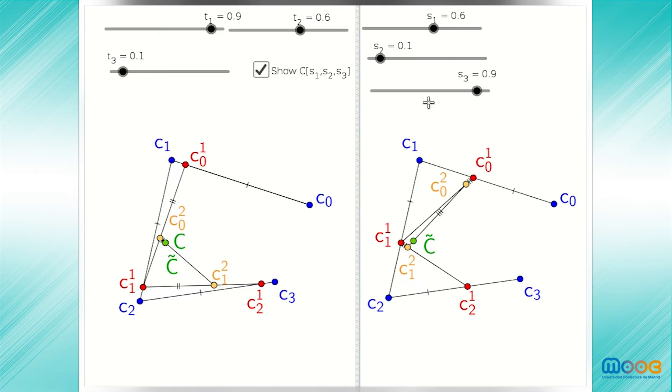If we were to change s sub 3, we see that the point corresponding to the proportions s moves away from c. However, if we put all three values equal but in different order, the points coincide. We can change this s2 to 0.9, and s3 to 0.1. And again, the points coincide. So we see that while the intermediate stages of the algorithm to compute the points depend very much on the proportions, the final point obtained does not depend on the order in which we choose the proportions.